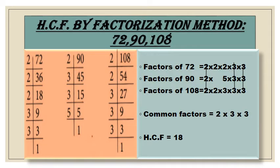Here is another example. Let us take three numbers: 72, 90, and 108. Break them into their prime factors. For 72, it is divisible by 2: 2 × 36 = 72, then we take 2 and 3 as prime factors. For 90, it is also divisible by 2: 2 × 45 = 90, then 3 × 15 = 45, then 3 × 5 = 15, and 5 × 1 = 5.